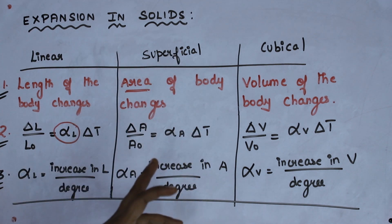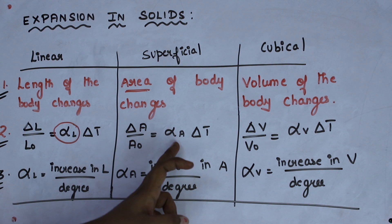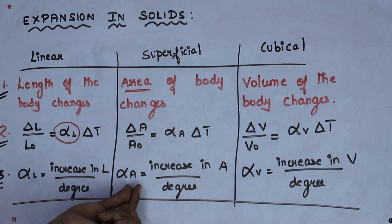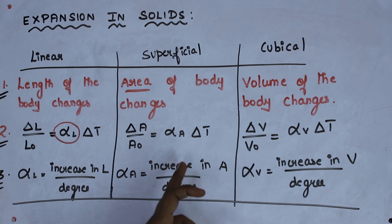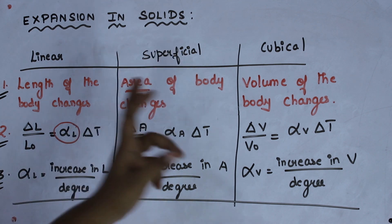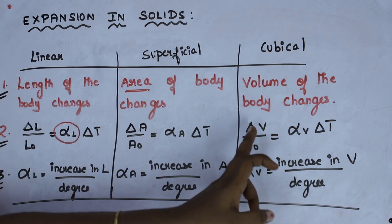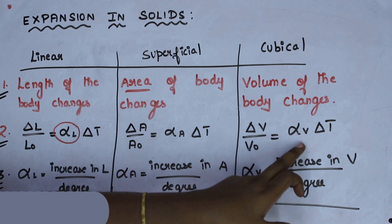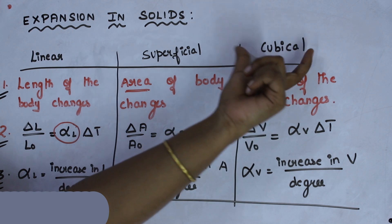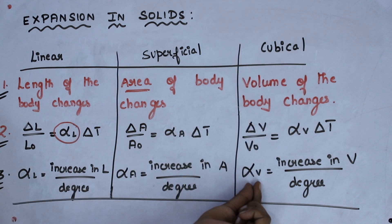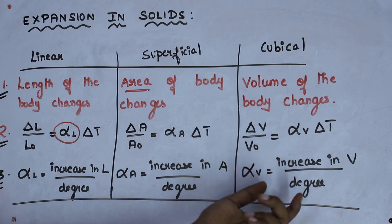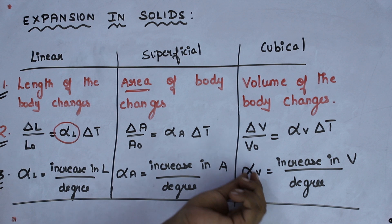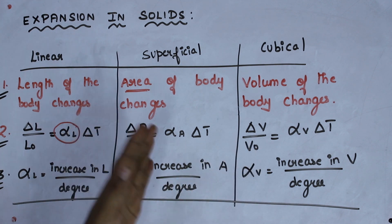For superficial expansion, the formula is delta A divided by A₀ equals alpha A times delta T, where alpha A is the coefficient of superficial expansion — increase in area per degree rise in temperature of its unit area. For cubical expansion, the formula is delta V divided by V₀ equals alpha V times delta T, where alpha V is the coefficient of cubical expansion — increase in volume per degree rise in temperature of its unit volume. These are the three types of expansion in solid.